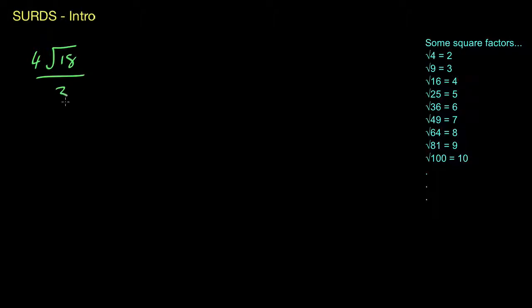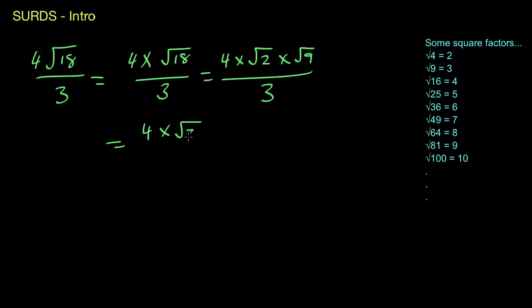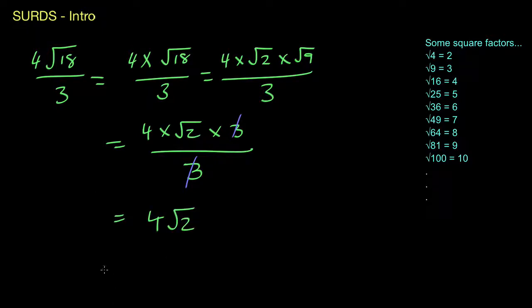Let's try 4√18 over 3. On top we have 4 times the square root of 18 over 3. We can write the square root of 18 as the square root of 2 times the square root of 9. The square root of 9 is 3, so we get 4 times the square root of 2 times 3, all over 3. We can see the 3 in the numerator and the 3 in the denominator cancel, leaving us with 4√2.